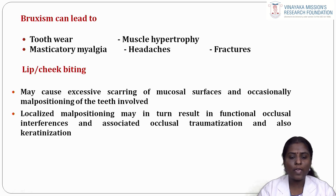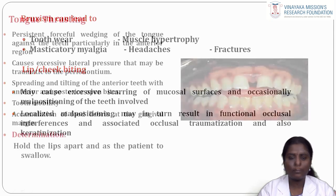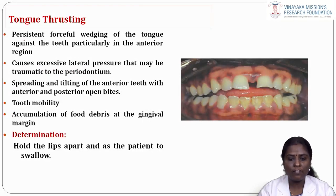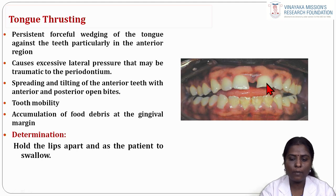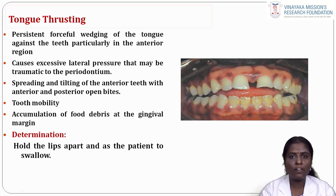Lip and cheek biting may cause excessive scarring of mucosal surfaces and occasionally malpositioning of the teeth involved, which may result in functional occlusal interferences and associated occlusal traumatization and keratinization. Tongue thrusting involves persistent forceful lingual wedging of the tongue, particularly in the anterior region. It causes excessive lateral pressure that may be traumatic to the periodontium, spreading and tilting of anterior teeth with anterior and posterior open bites. There will be tooth mobility and accumulation of food debris at the gingival margin. To detect tongue thrusting, hold the lips apart and ask the patient to swallow — there will be an infantile swallow pattern.